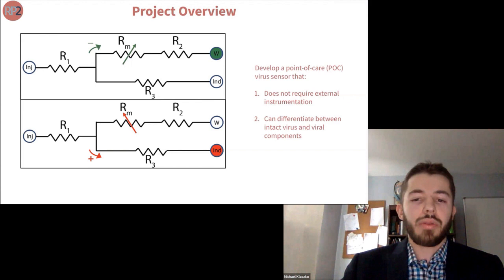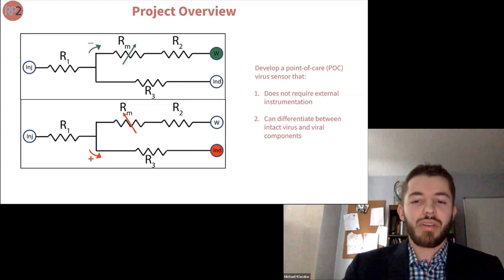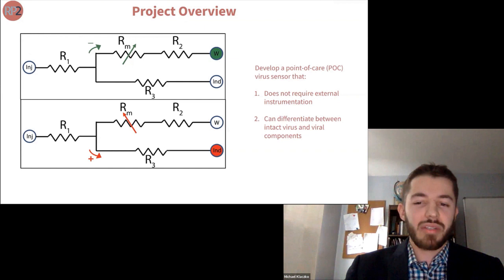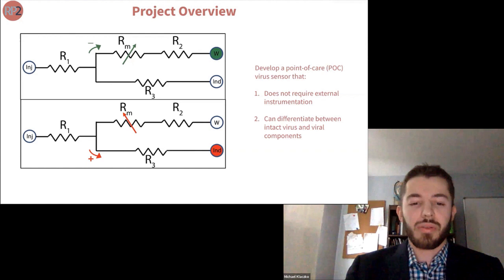We aimed to develop a point-of-care virus sensor that did two things: first, function without the need for external instrumentation to maximize accessibility, and second, differentiate between intact virus and viral components to avoid the false positives that PCR assays produced in individuals who were previously infected but no longer infectious. The sensor is shown as a hydraulic resistance diagram. In a negative test result, a sample is injected and takes the upper path through a porous ultra-thin silicon nanomembrane — the path of least resistance until virus is introduced.